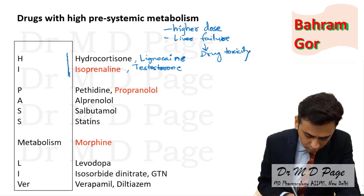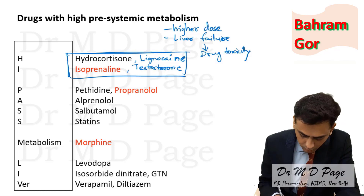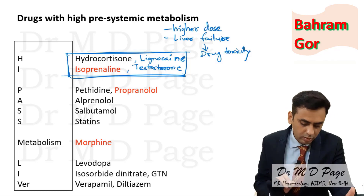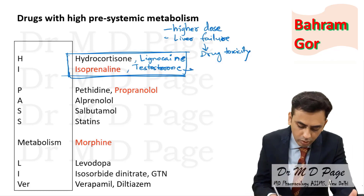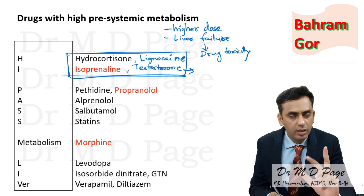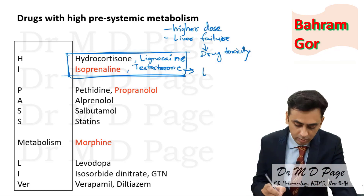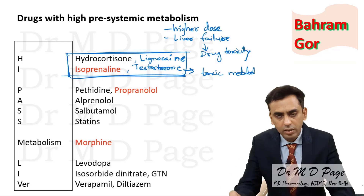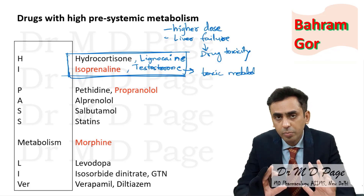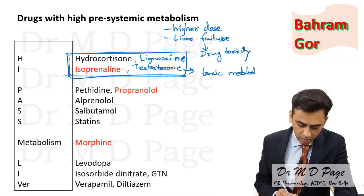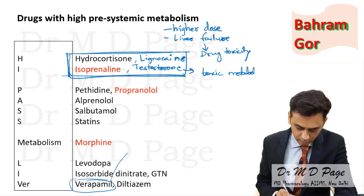Why are some of these drugs — hydrocortisone, isoprenaline, lignocaine, testosterone — not used orally? After getting metabolized, these drugs become inactivated or produce toxic metabolites. If given by the oral route, some drug will reach systemic circulation, but toxic metabolites will be much more and will cause toxicity. Hence these drugs are not used orally.